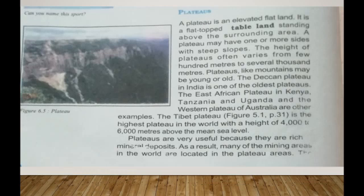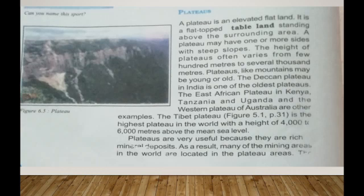In plateau areas there may be several waterfalls, as rivers fall from a great height. In India, the Hundru Falls in the Chota Nagpur plateau on the river Subarnarekha and the Jog Falls in Karnataka are examples of such waterfalls. Lava plateaus are rich in black soil, which is very fertile and good for cultivation. Many plateaus also have scenic spots that attract tourists.